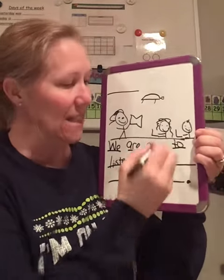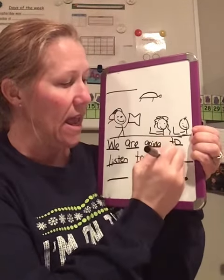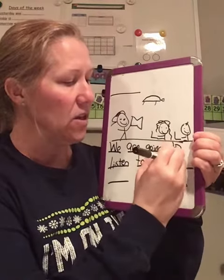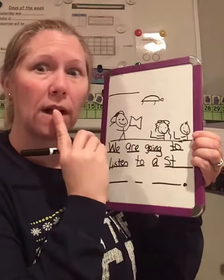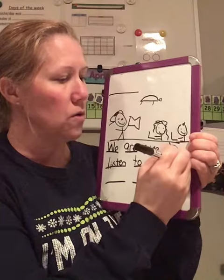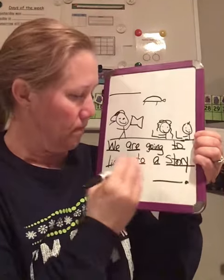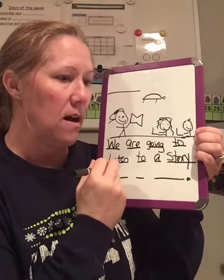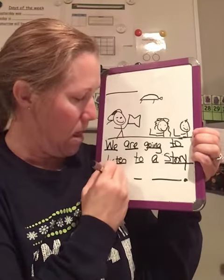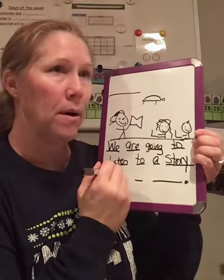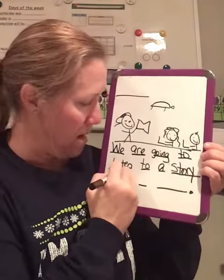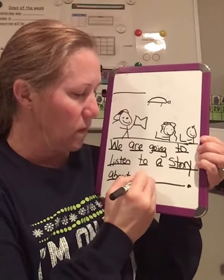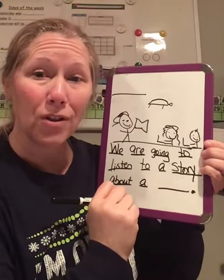To listen to a story — S, S, good. S, T, T. And I hear a T. Story — I hear an R. Story about — I hear an A. And then I hear a B. About a turtle.